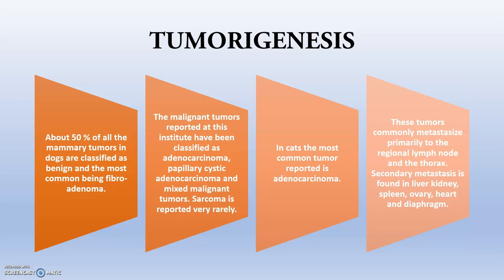Regarding tumor pathogenesis, approximately 50% of mammary tumors in dogs are classified as benign, with the most common being fibroadenoma. Among malignant tumors, the most commonly reported types are adenocarcinoma, papillary cystic adenocarcinoma, while sarcoma is very rarely reported. These tumors commonly metastasize primarily to the regional lymph nodes of the thorax, lungs, liver, and kidneys.